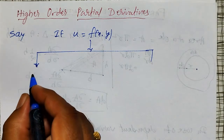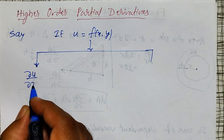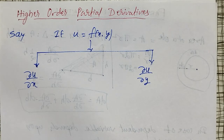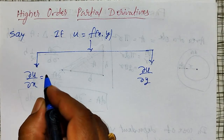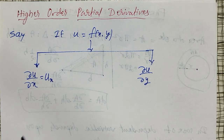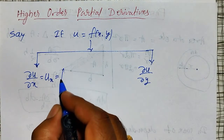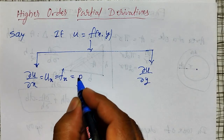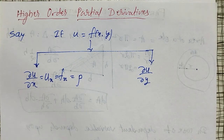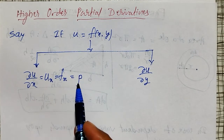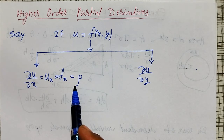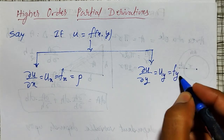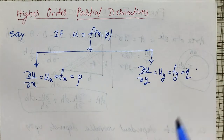Therefore there exist two partial derivatives: ∂u/∂x with respect to x, and ∂u/∂y with respect to y. I can denote ∂u/∂x as u_x, or f_x, or simply p. Similarly, ∂u/∂y can be denoted as u_y, or f_y, or q. We use the short notations p and q for further studies to avoid lengthy expressions.